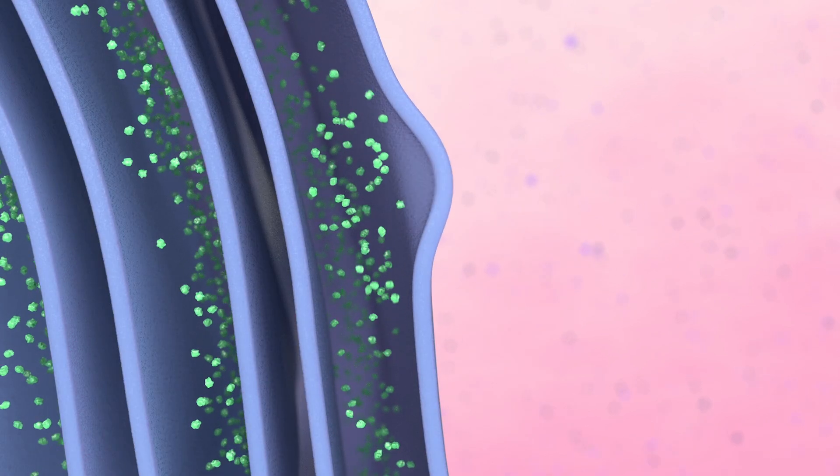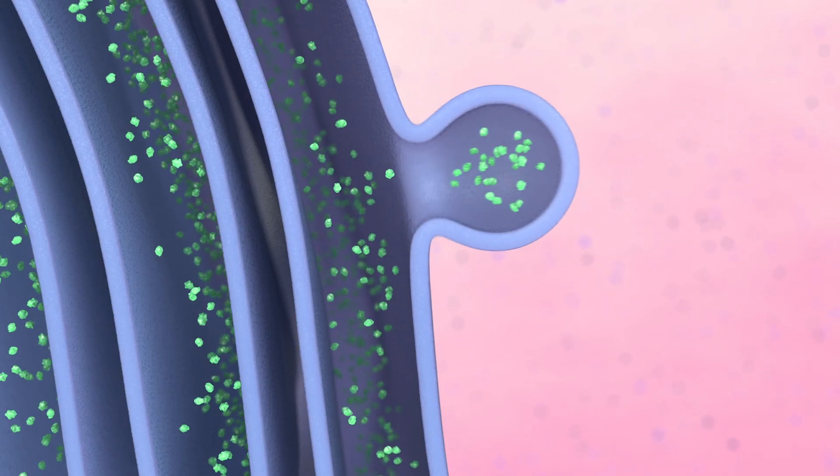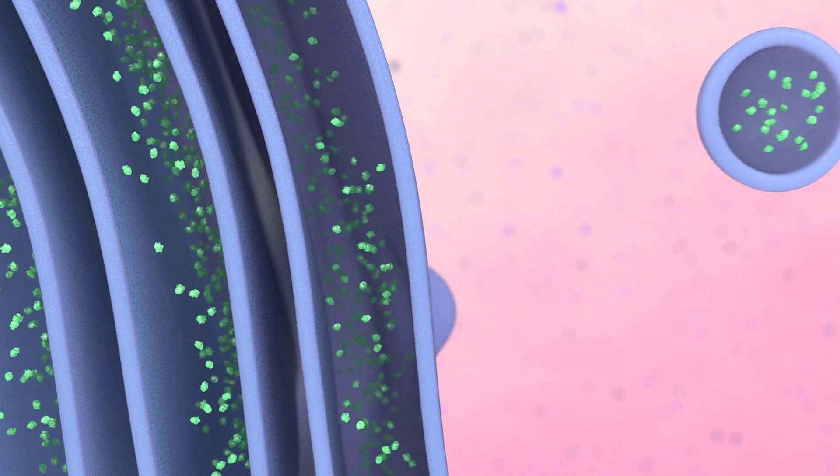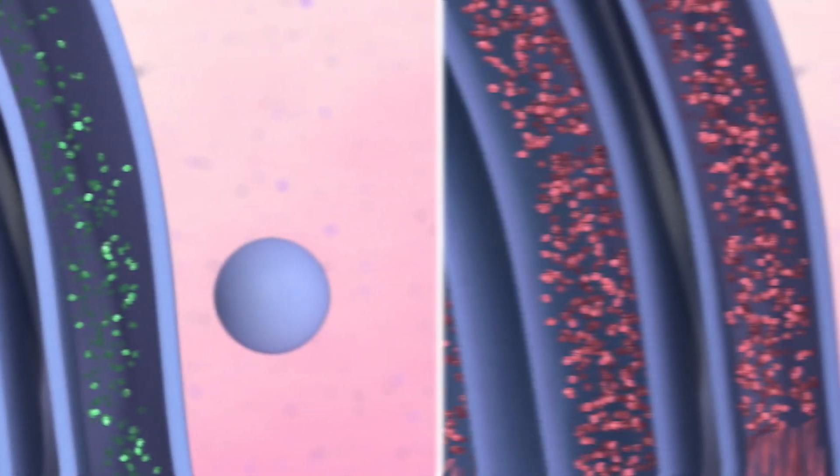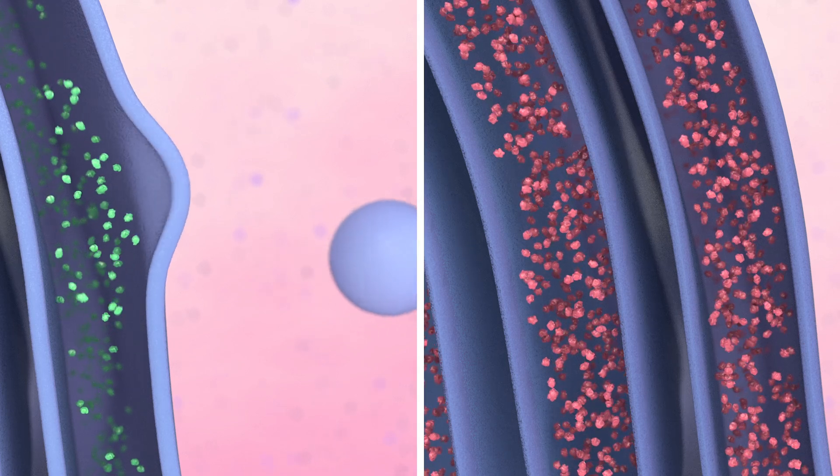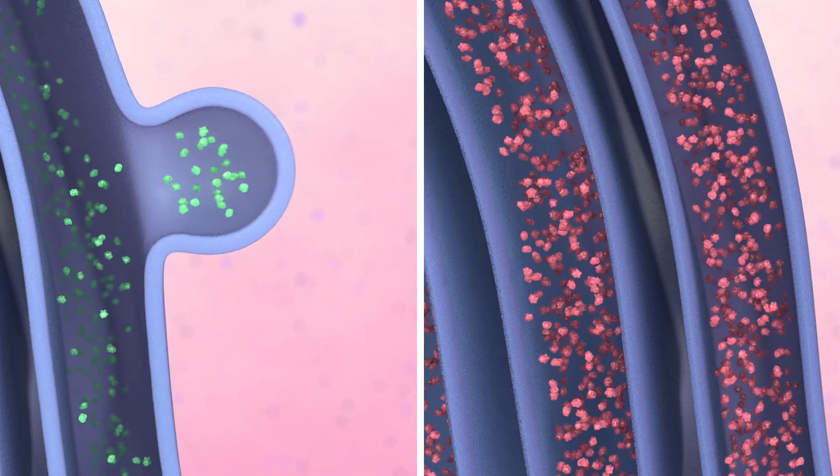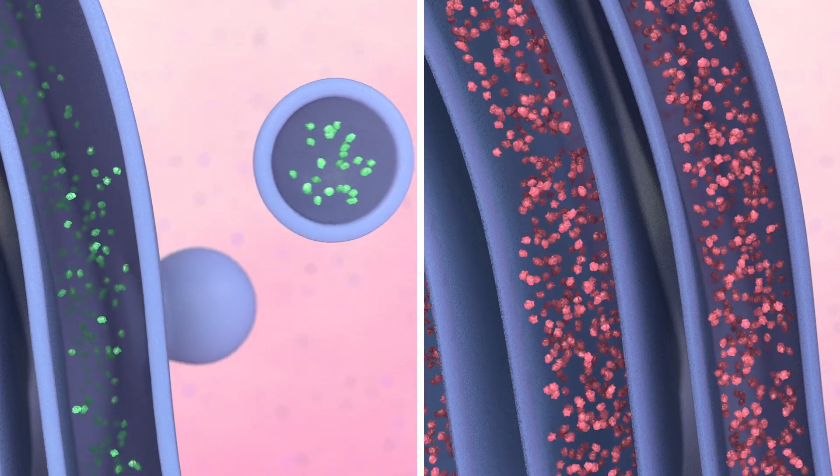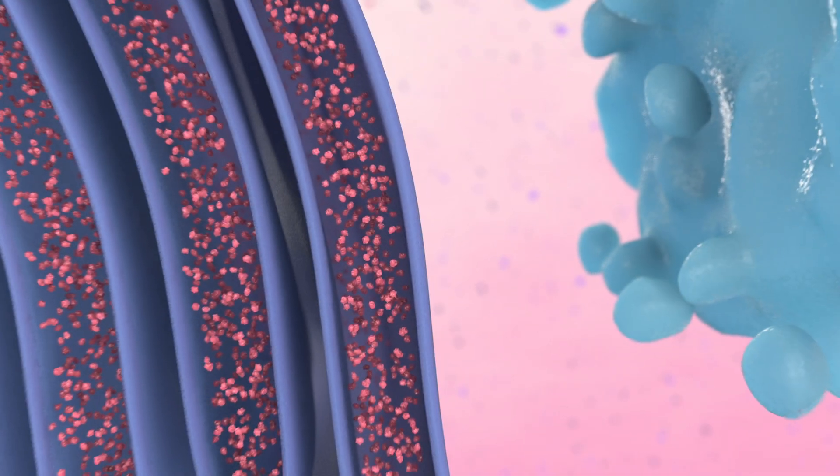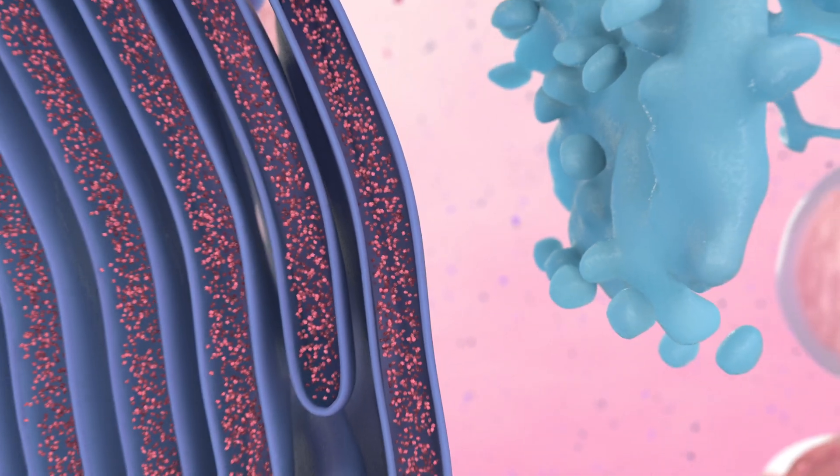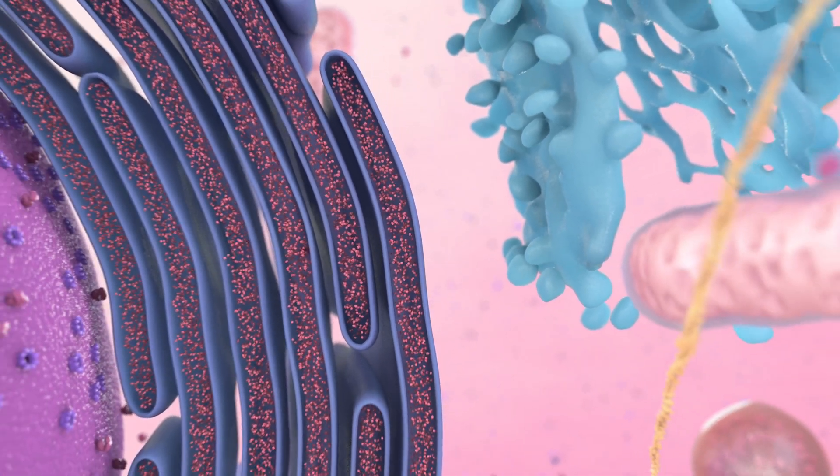In contrast to the healthy version of the example protein, which is efficiently exported from the endoplasmic reticulum (ER), the mutated protein does not undergo this normal export process and as a result accumulates in the ER, leading to the cell becoming sick.